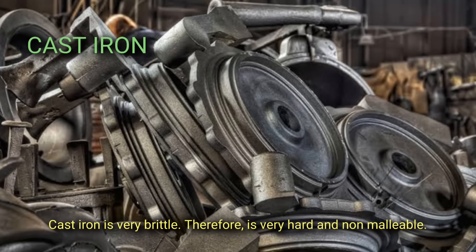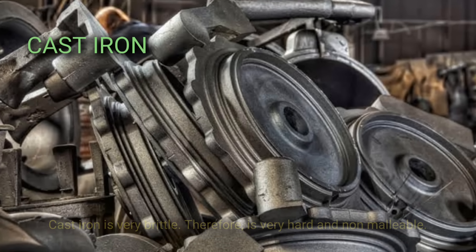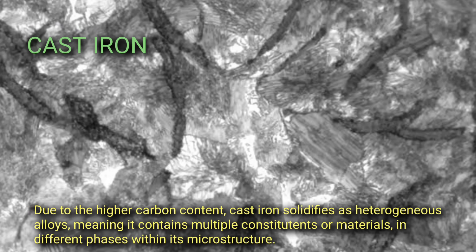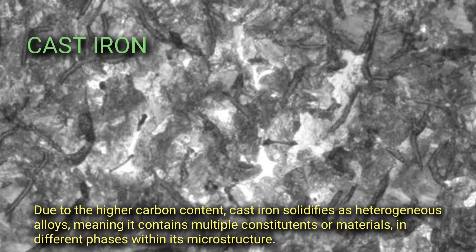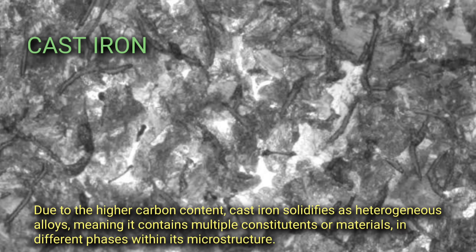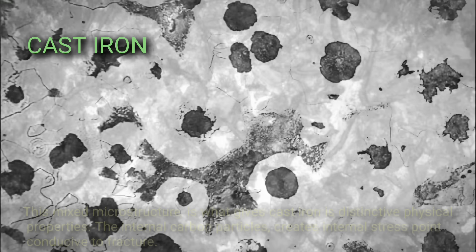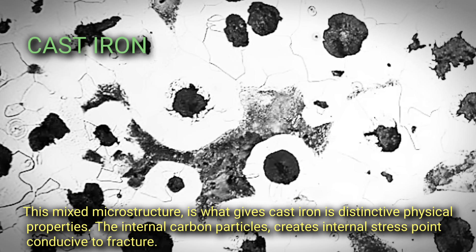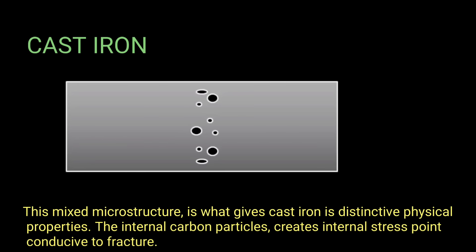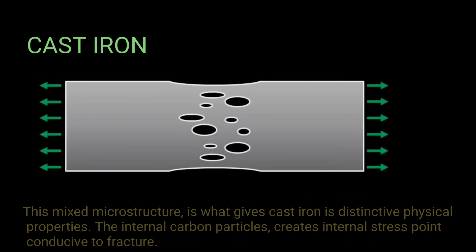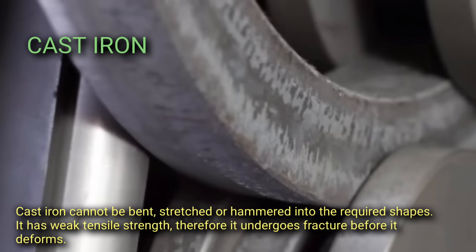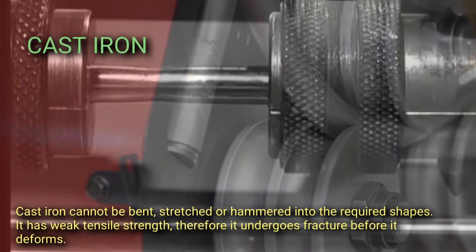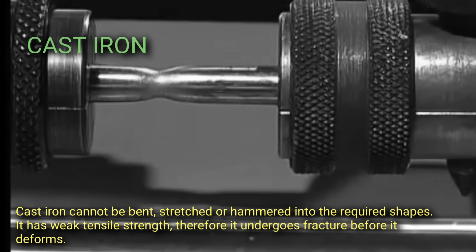Cast iron is very brittle, therefore it is very hard and non-malleable. Due to the higher carbon content, cast iron solidifies as a heterogeneous alloy, meaning it contains multiple constituents or materials in different phases within its microstructure. This mixed microstructure is what gives cast iron its distinctive physical properties. The internal carbon particles create internal stress points conducive to fracture. Cast iron cannot be bent, stretched, or hammered into required shapes — it has weak tensile strength and undergoes fracture before it deforms.